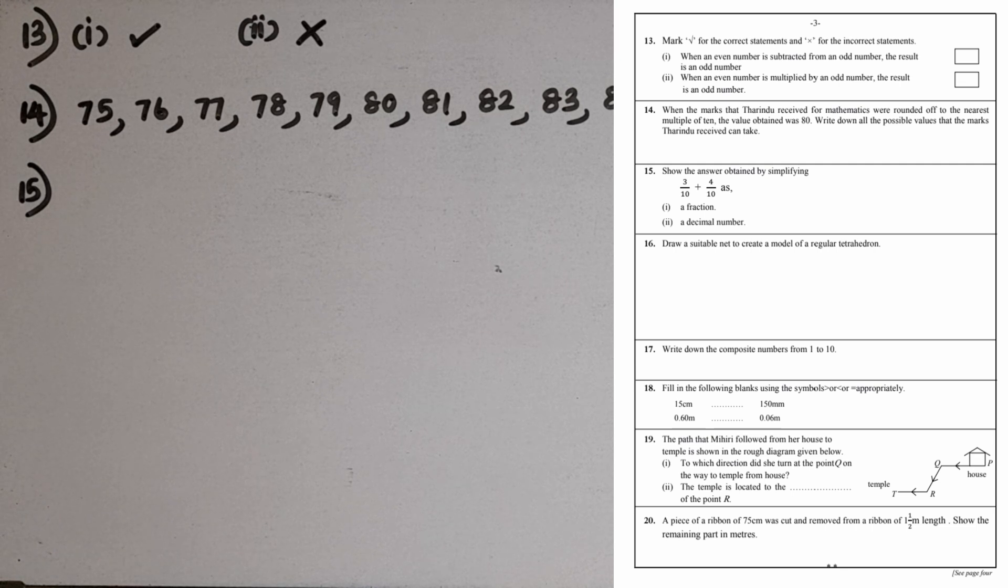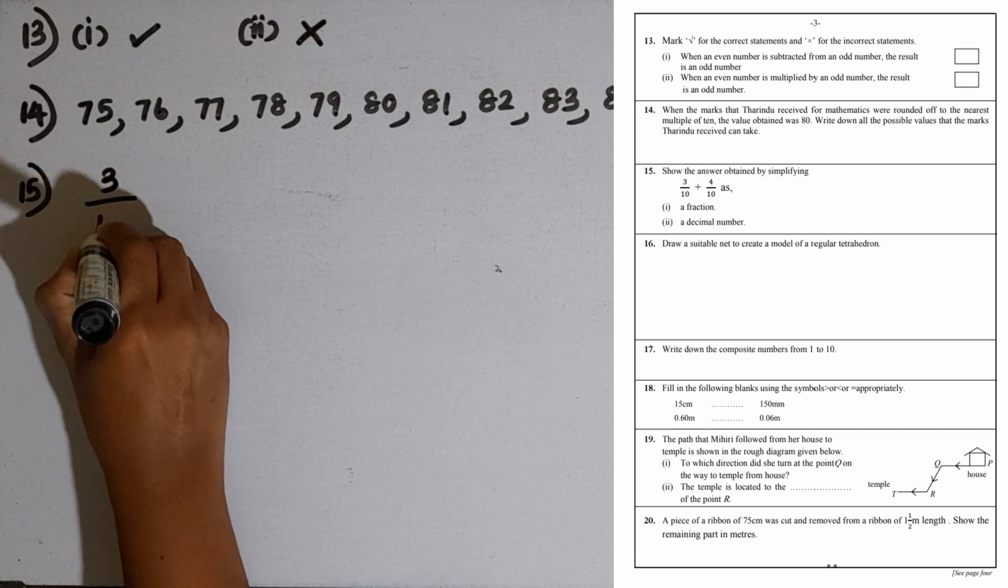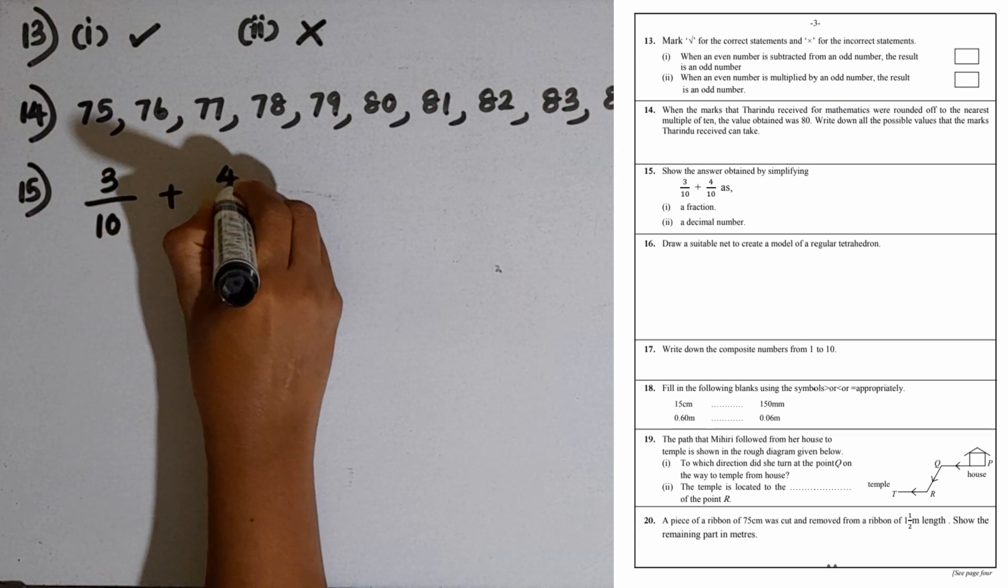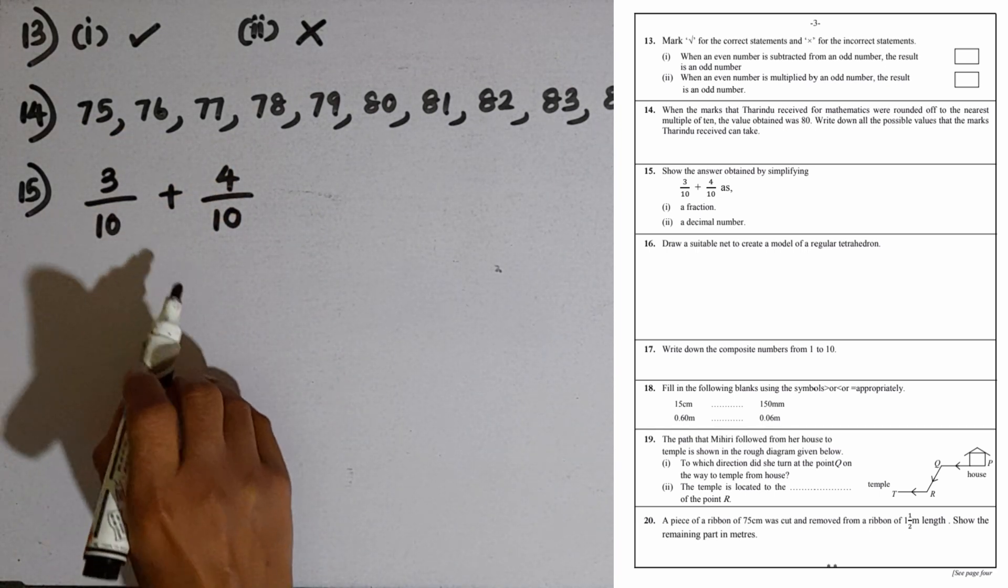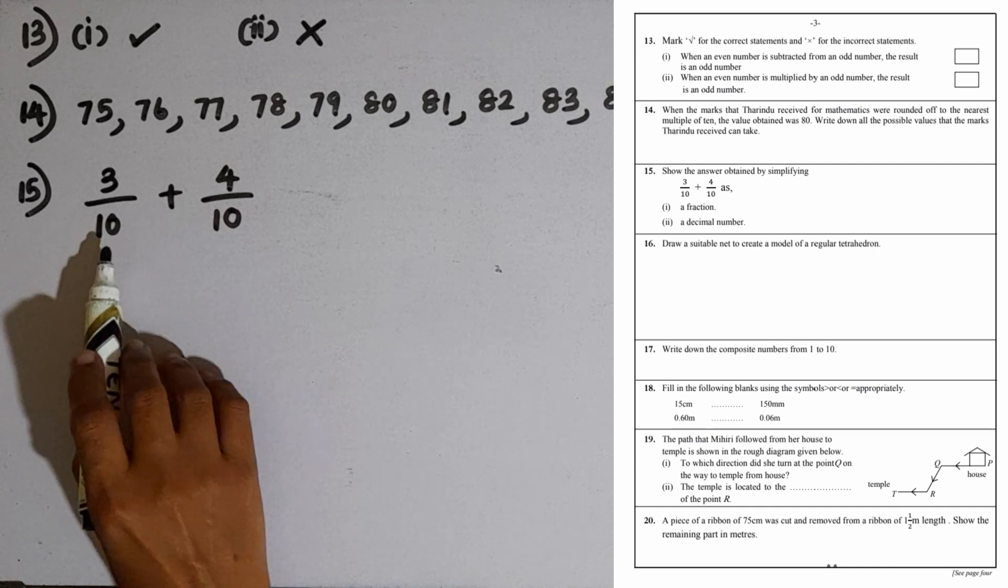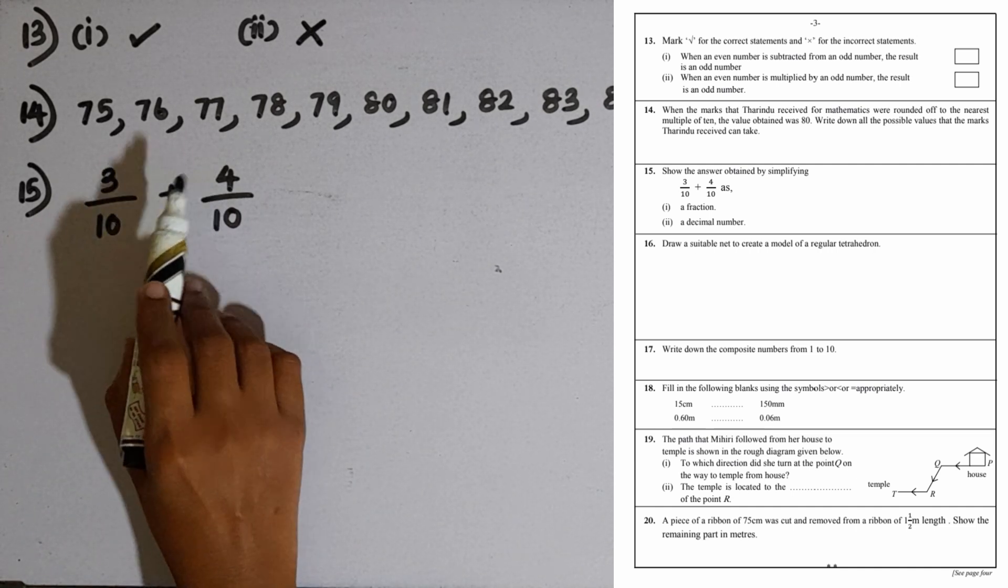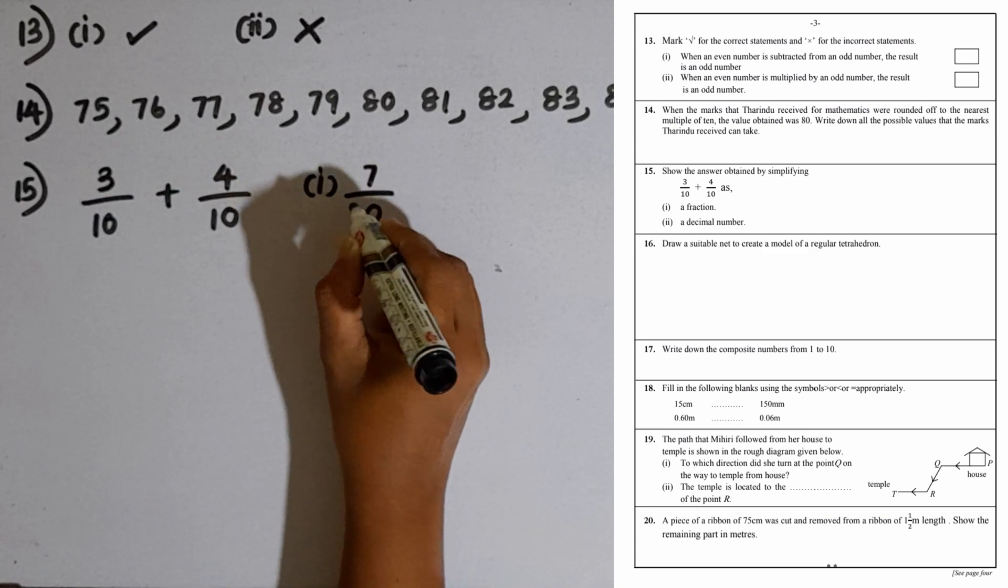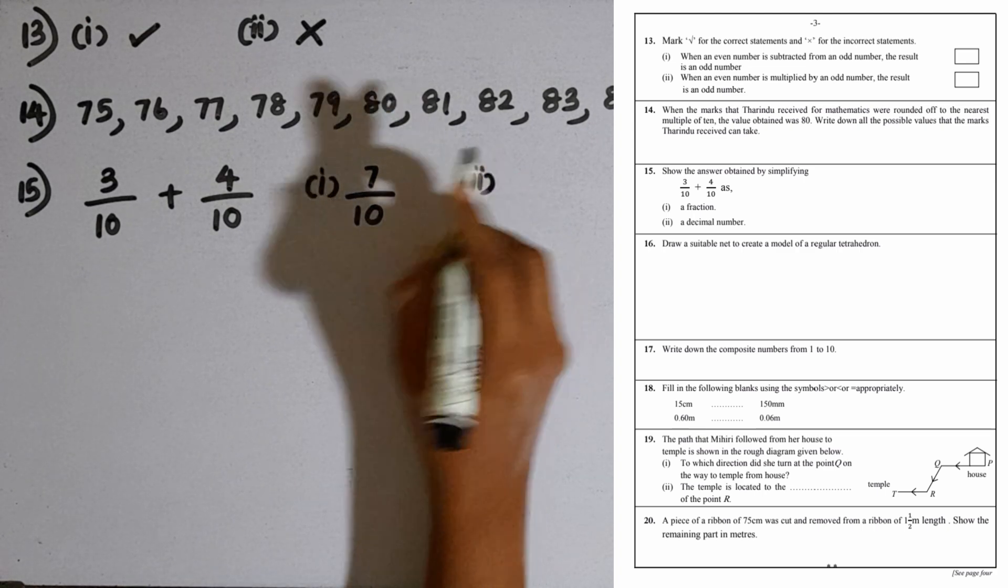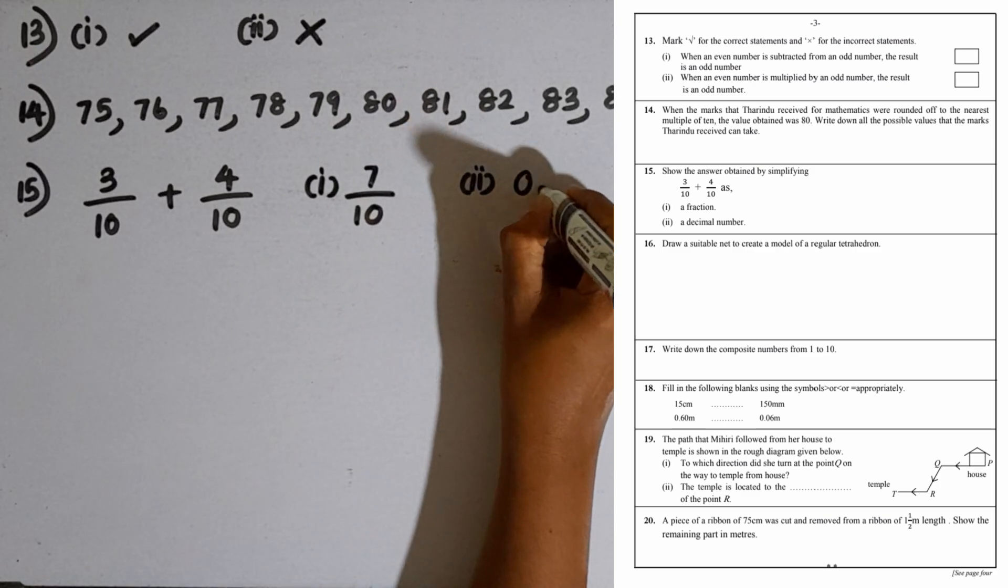Question number 15: Show the answer obtained by simplifying 3 over 10 plus 4 over 10. First one as a fraction. As the denominators are equal, we can add the two numerators. 3 plus 4 is 7, so the answer is 7 over 10 as a fraction. As a decimal number, we can write this as 0.7.